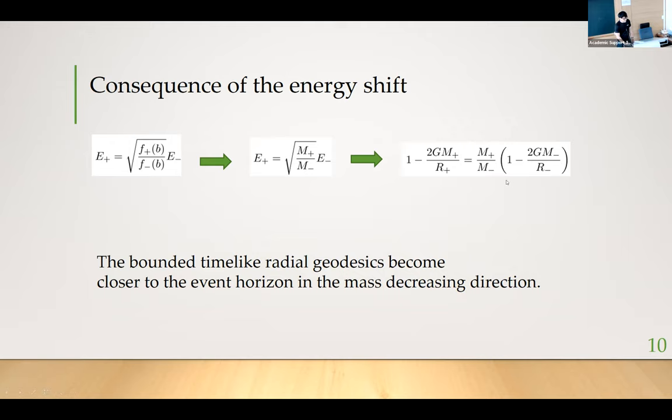From this algebraic equation, you probably need to do some bigger envelope calculation and you can have this conclusion that in this sense that bounded time like geodesic become closer to the event horizon in mass decreasing direction. So the count closer means that the maximal radius reduce after each cycle.